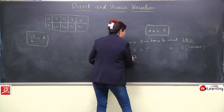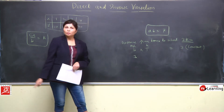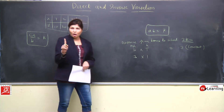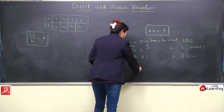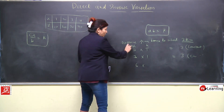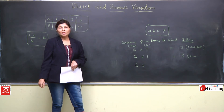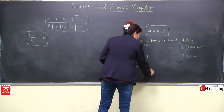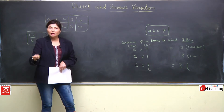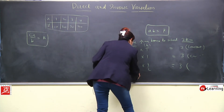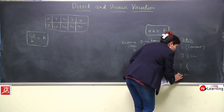Let's say speed 3 km per hour hai, toh 3 km cover karne ke liye time 1 hour lagega — product is 3, which is constant. Ab speed double karke 6 km per hour kar di, toh time half ho jayega — tab hi answer 3 aayega. Phir speed 9 km per hour ki, so time 1/3 hour ho gaya. Speed 12 km per hour ki, toh time 1/4 hour — means 15 minutes lagenge.